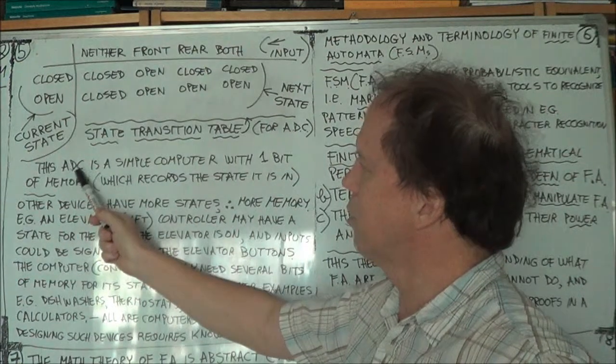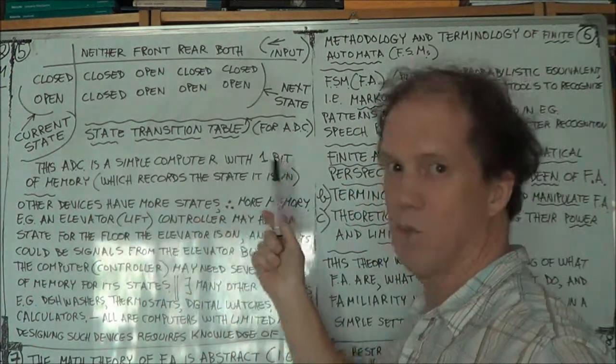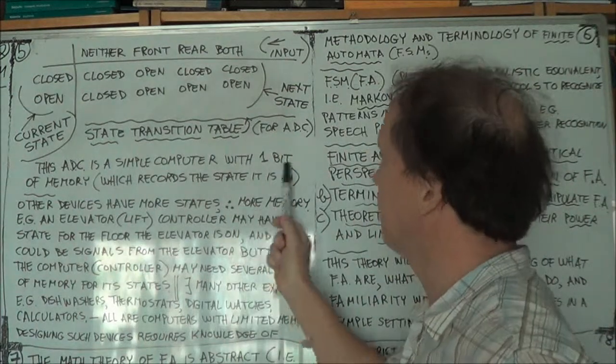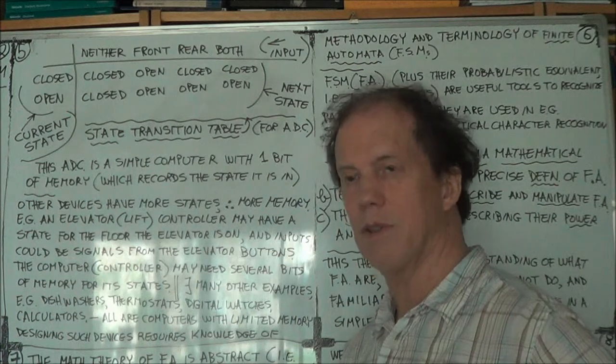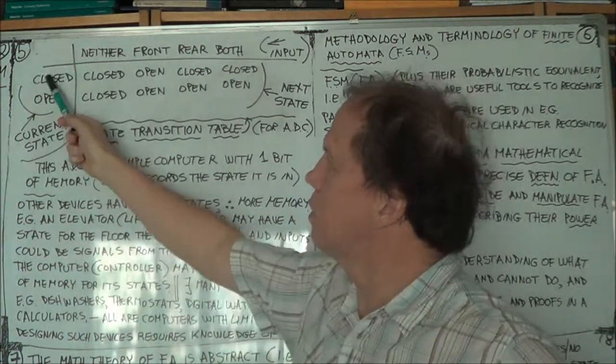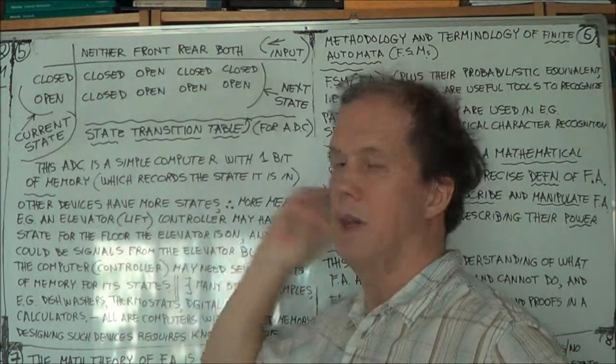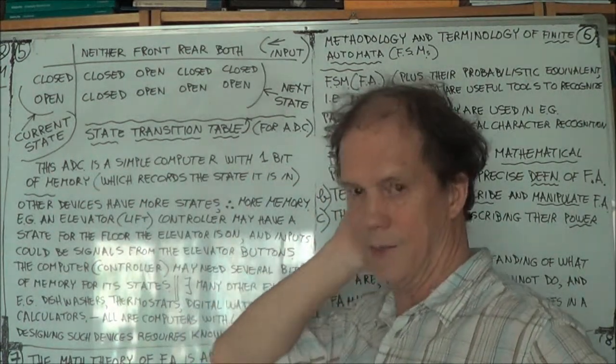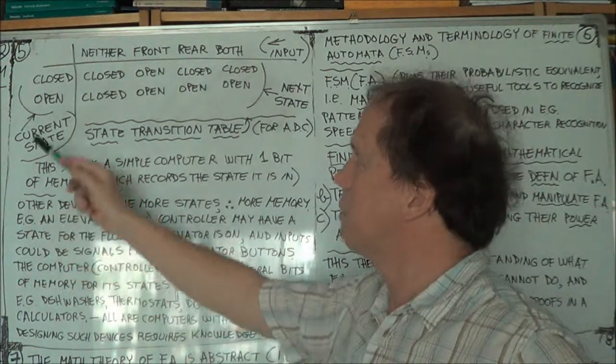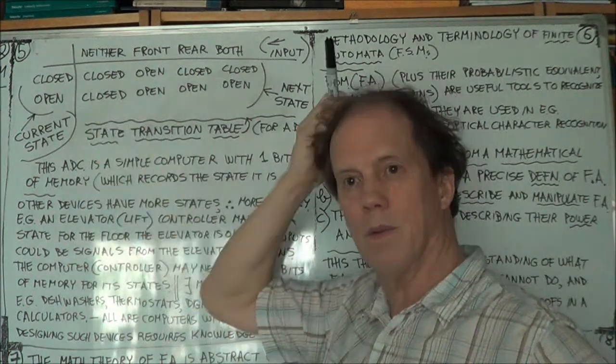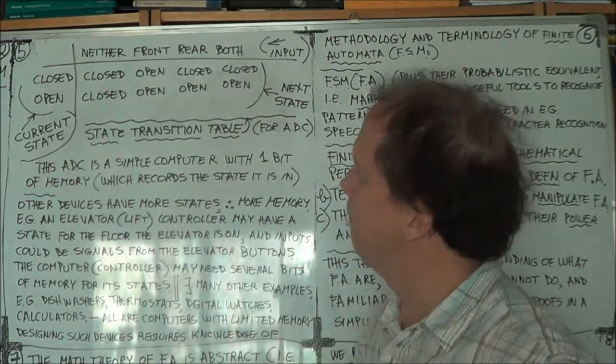Now, this automatic door control, this controller, is a very simple computer. It just has one bit of memory. One bit. And what's that memory needed for? Well, to remember which of the two states that it's in. So for example, if the bit is set at zero, that might correspond to closed. And if it's set at one, that might correspond to open.